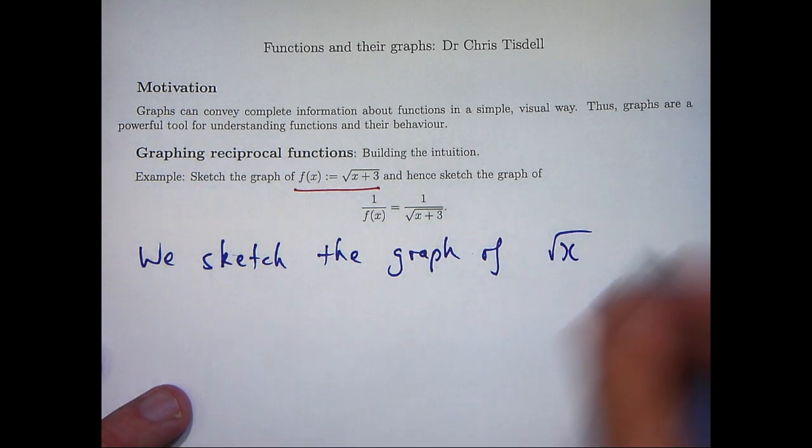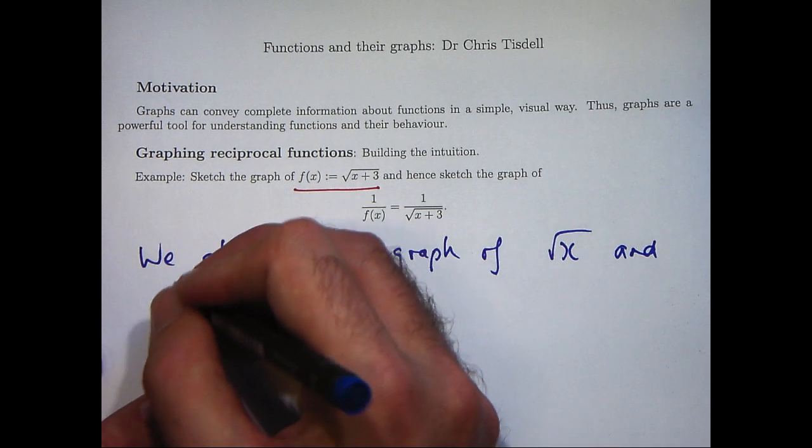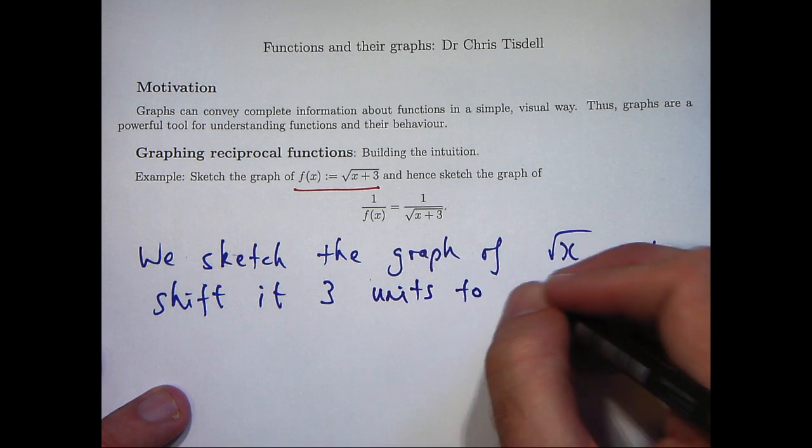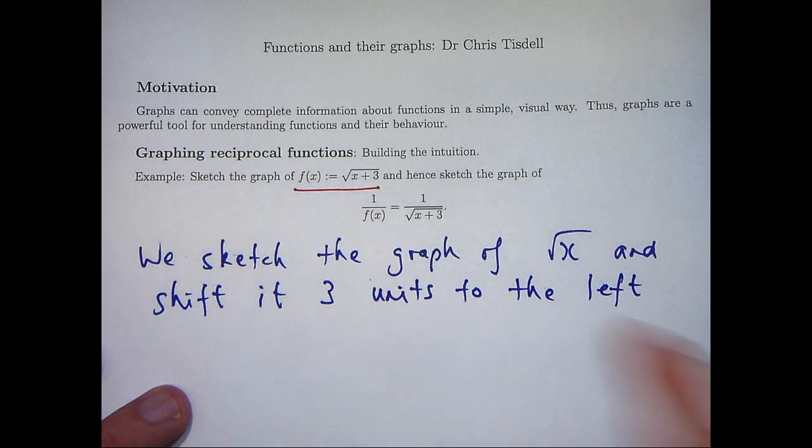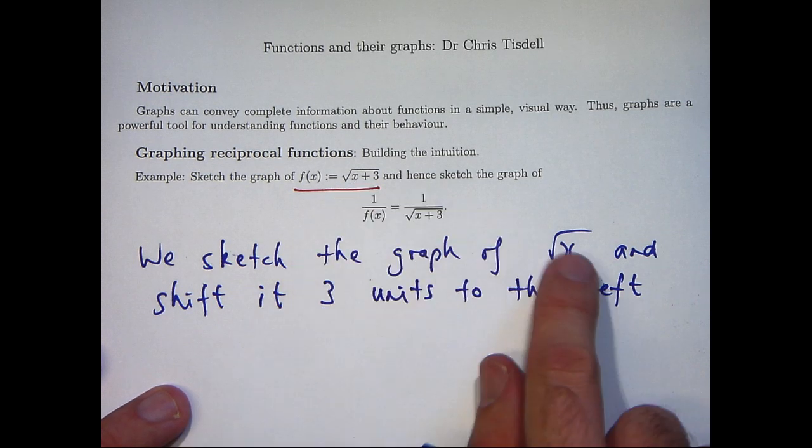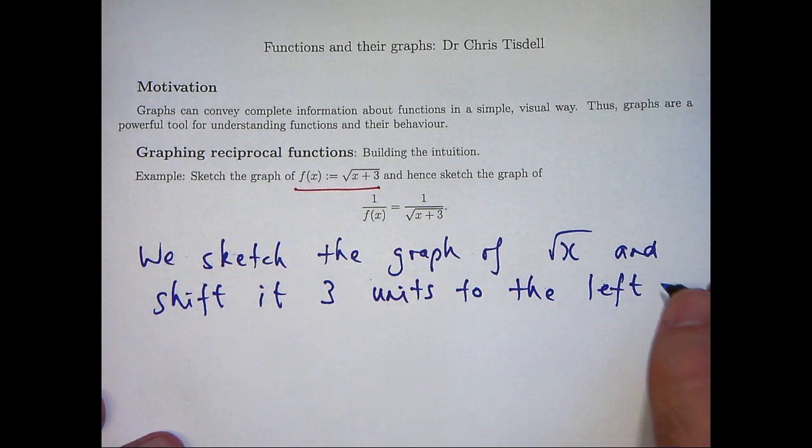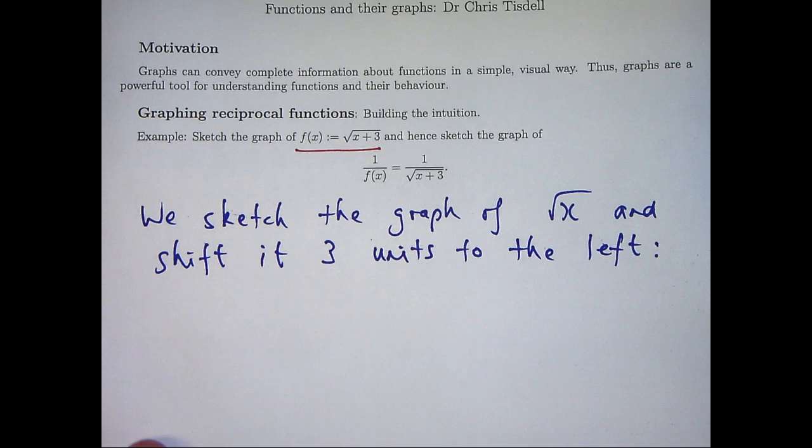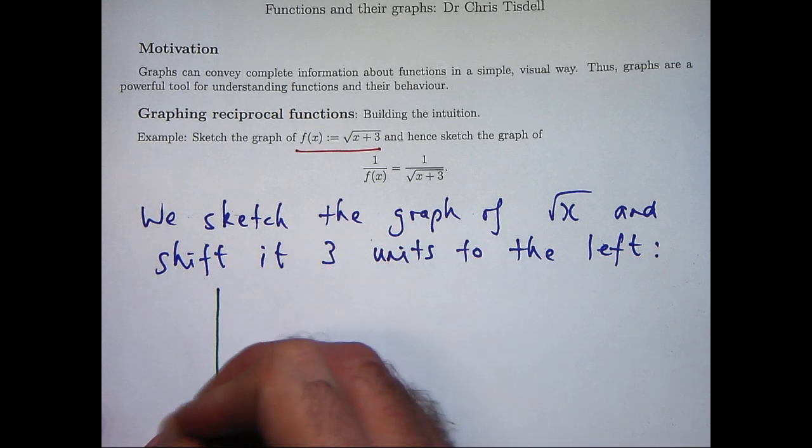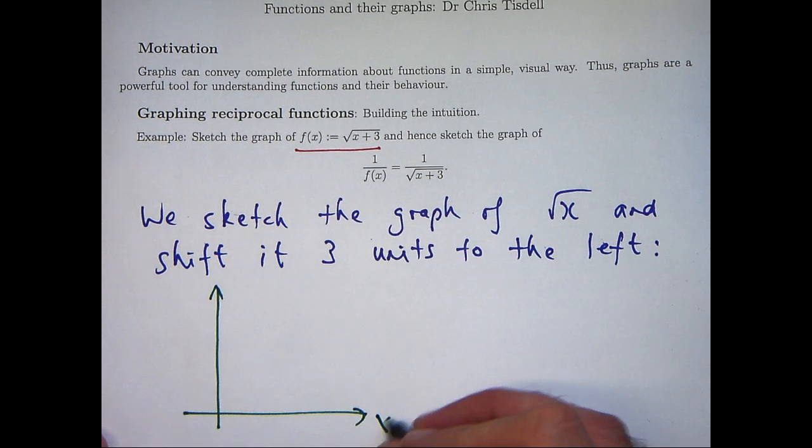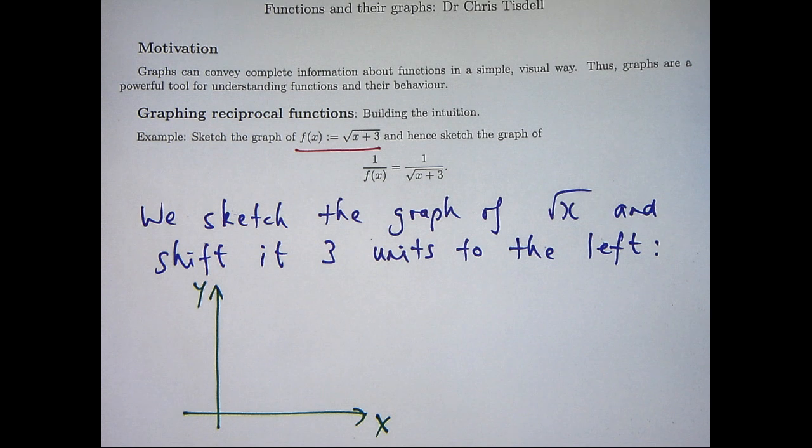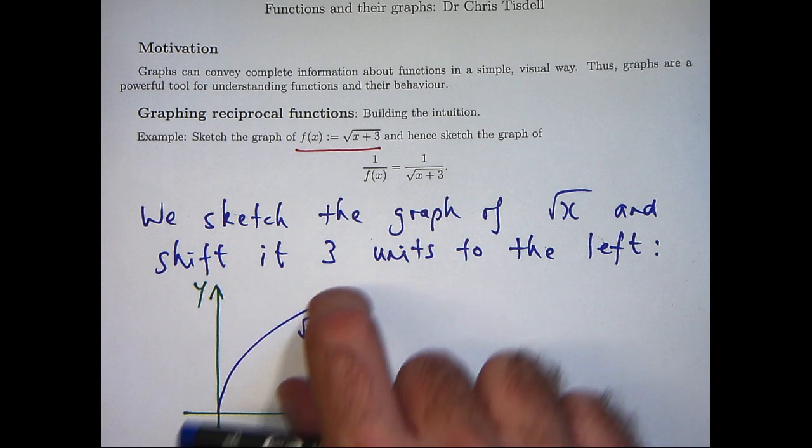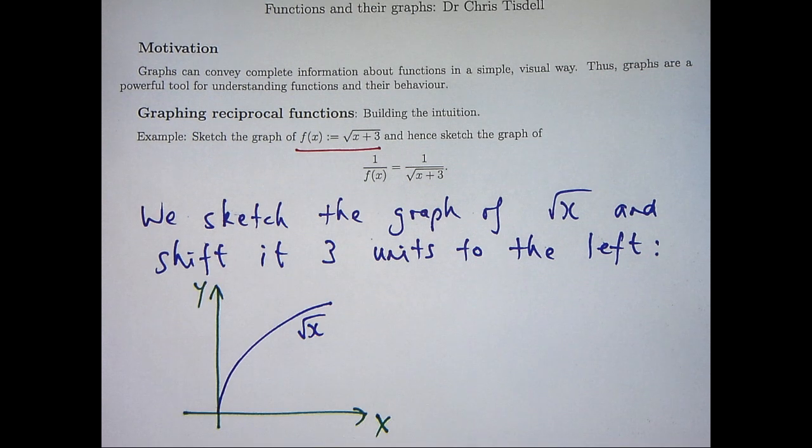So the graph of root x, and I'm going to shift that curve 3 units to the left. If this was a minus 3, we'd take the graph of this curve and shift it 3 units to the right. Now, I am assuming here that you can sketch the graph of simple functions like root x. Okay, so this is what the graph of root x looks like. So we're going to take this curve and shift it 3 units to the left.